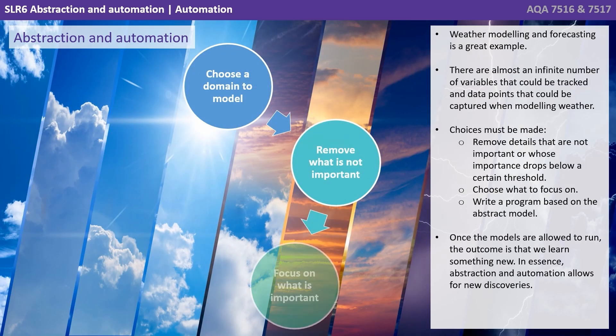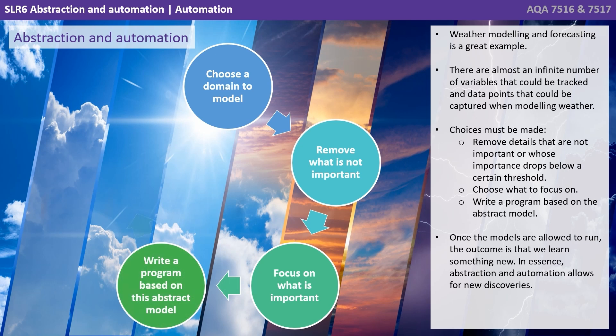Weather modelling and forecasting is a great example. There are almost an infinite number of variables that could be tracked and data points that could be captured when modelling weather. Choices must be made: remove details whose importance drops below a certain threshold, choose what to focus on, and write a program based on this abstract model.